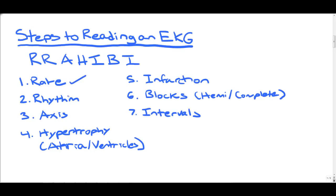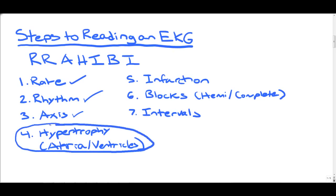We've talked about rate in the past, and how to determine rhythm — 300 divided by the number of large boxes between two consecutive QRSs. We've also talked about axis: left axis deviation, right axis deviation, and normal axis. So today we're going to talk about hypertrophy, more specifically atrial enlargement. Let's get to understand the criteria for atrial enlargement.